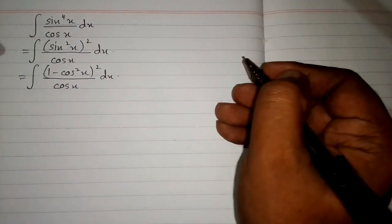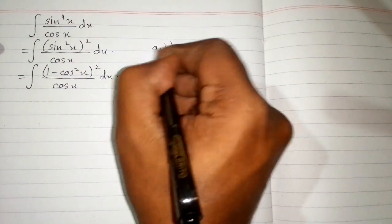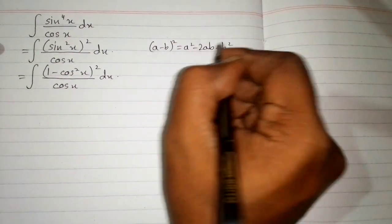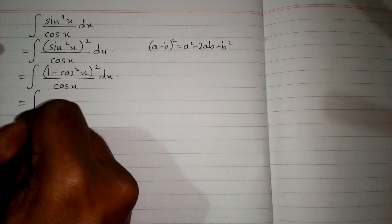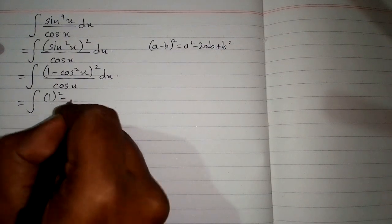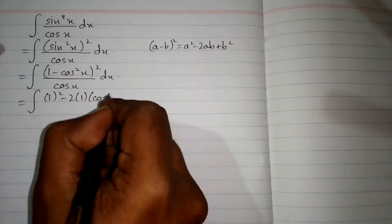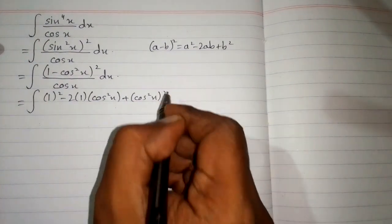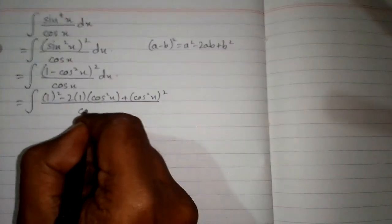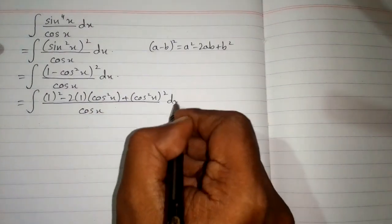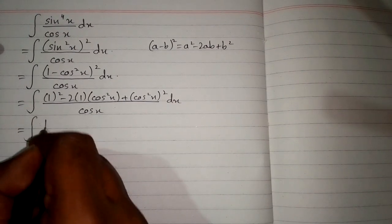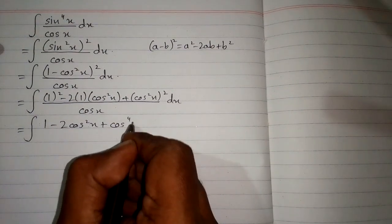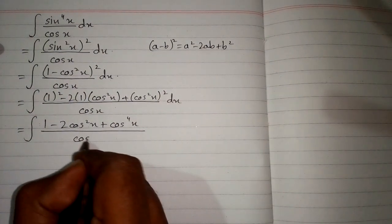Now we apply the formula: a minus b whole square equals a square minus 2ab plus b square. So we have 1 square minus 2 times 1 times cos square x plus cos square x to the power 2, upon cos x. This gives us 1 minus 2 cos square x plus cos to the power 4, upon cos x.